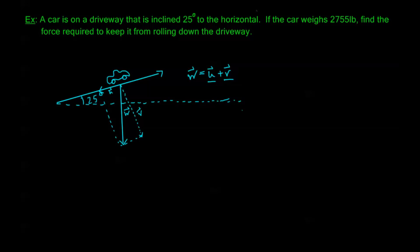The force required to keep the car from rolling down is whatever force is being applied by vector U, since that's what's pushing it down the driveway. Vector V is absorbed by the driveway and doesn't contribute to rolling. The magnitude of U is the component of W along U, which equals the magnitude of W times cosine theta, where theta is the angle between U and W.